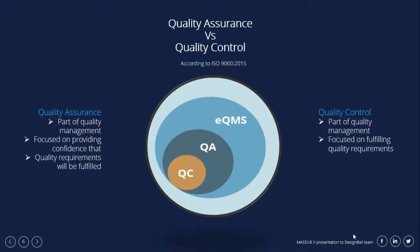Now let's look at quality assurance versus quality control according to the ISO 9000 standard. Quality assurance and quality control are both part of quality management. Quality assurance focuses on providing confidence that quality requirements will be fulfilled, whereas quality control focuses on fulfilling quality requirements.